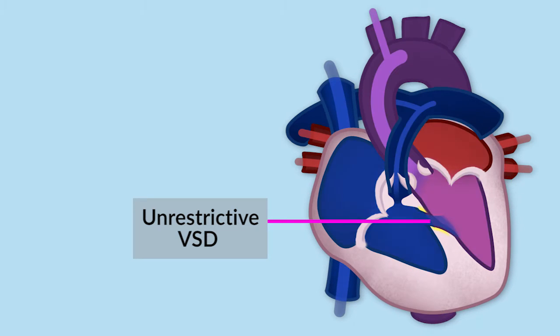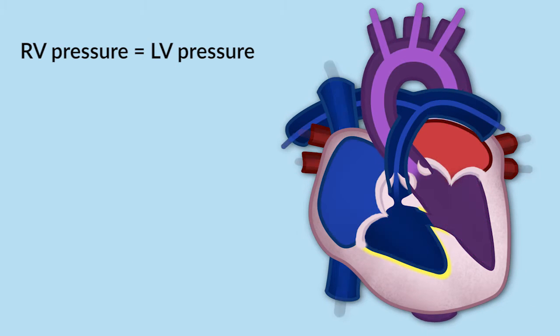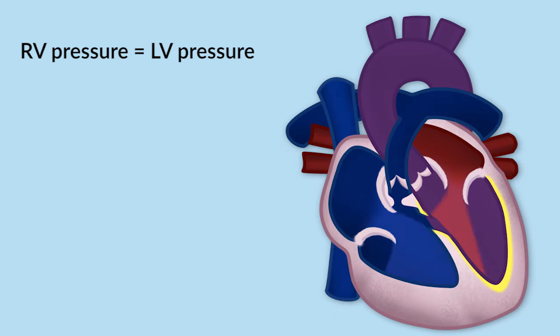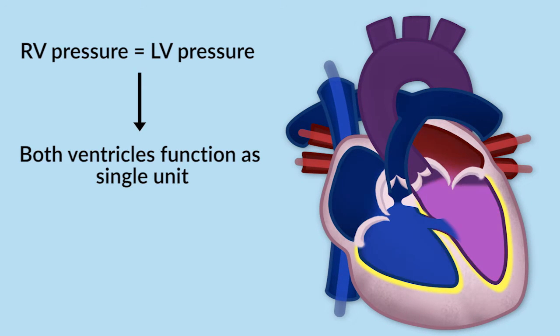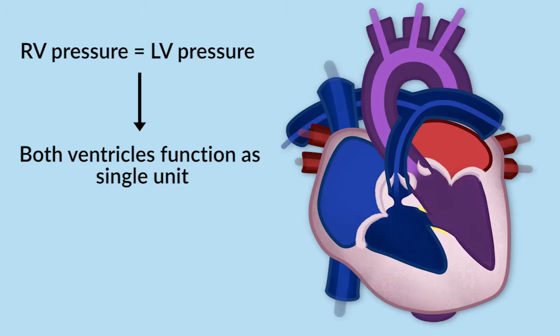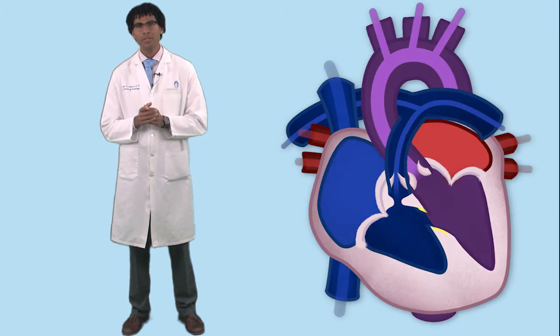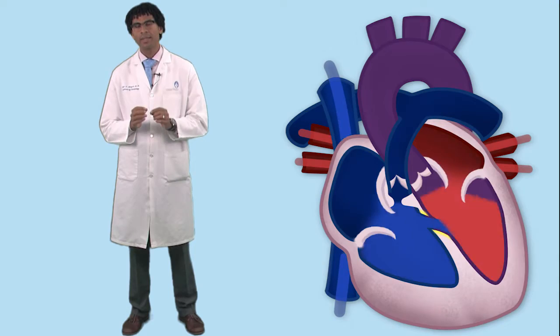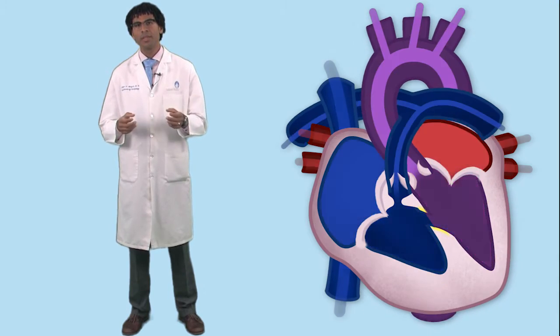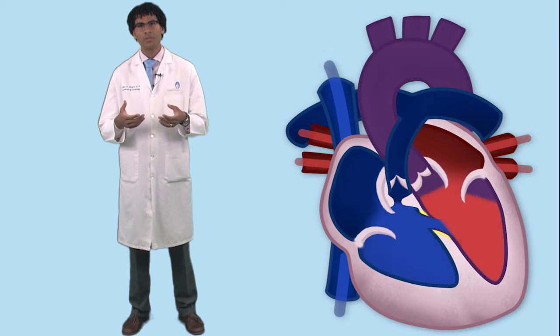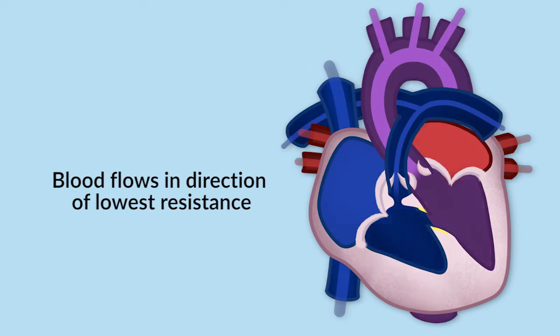The physiology that results from those four features is easy to understand if you grasp one central principle: the VSD is unrestrictive. What that means is that the pressure in the right ventricle is the same as the pressure in the left ventricle. So from a functional standpoint, both of those ventricles function as a single unit. What that means is that if a red blood cell is in one of those ventricles, the direction it takes leaving the heart — either going to the lungs or going to the body — is entirely dependent on the resistance to blood flow. Blood will flow in the direction of lowest resistance.